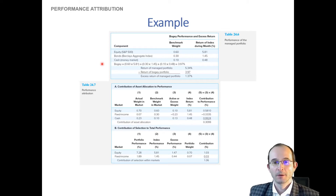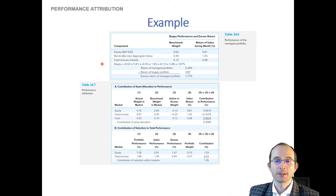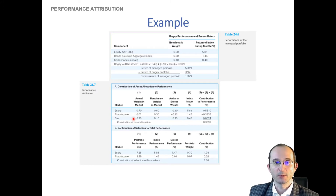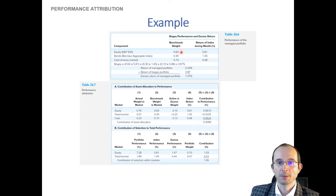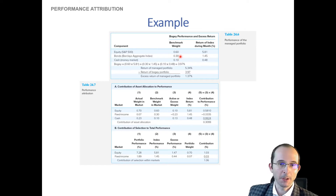For the allocation effect, we're looking at differences in weights relative to our portfolio versus the benchmark, holding the benchmark returns constant across both. Our portfolio had a 70% allocation to equities, 7% to fixed income, and 23% to cash. The benchmark was 60% equity, 30% fixed income, and 10% cash. We've made some pretty big active allocation decisions — dramatically underweighted fixed income, and overweighted equities and cash.